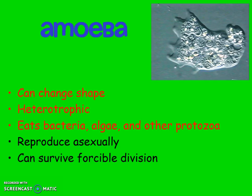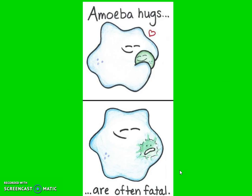The amoeba is my favorite because it looks like a sparkly blob. The amoeba can change shape. It is heterotrophic — it eats bacteria, algae, and other protozoa. Heterotrophic means that it cannot make its own food; it has to eat. It reproduces asexually, meaning it can split and make another amoeba exactly like itself, and it can survive forcible division — if you cut this amoeba in half, it could survive and you'd have two amoebas. The amoeba uses pseudopods to eat — as the little cartoon says, 'Amoeba hugs are often fatal!'